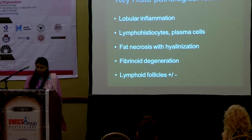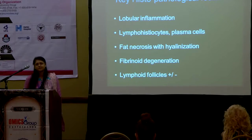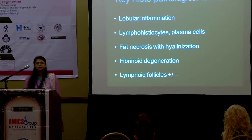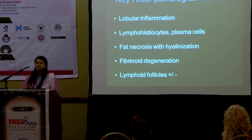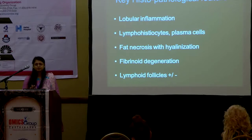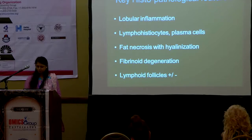An important condition that can clinically mimic lupus profundus is subcutaneous T-cell lymphoma, which is diagnosed mainly by histopathological features. Atypical beta CD8+ lymphocytes, absence of septal panniculitis, absence of plasma cells, and beta-cell follicles provide clues to this diagnosis.